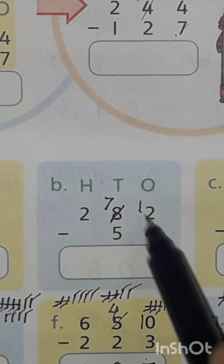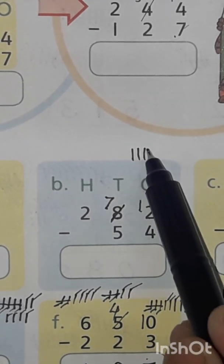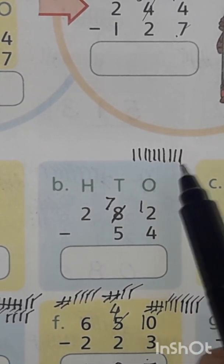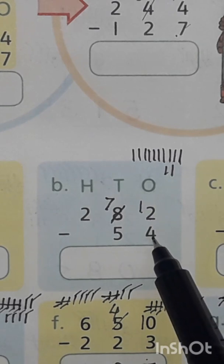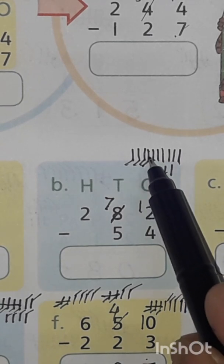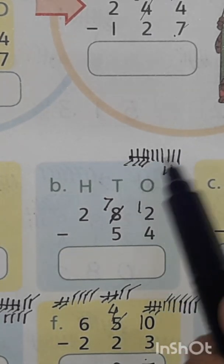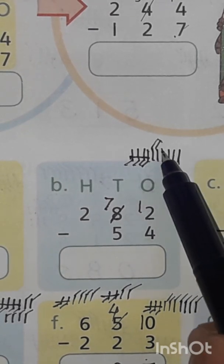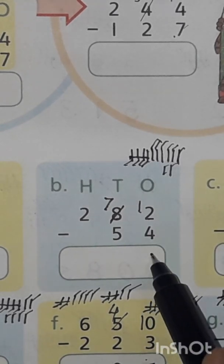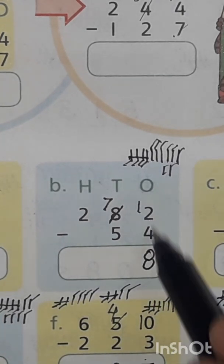Draw 12 lines: 1 through 12. The next number is 4. Cut 4 lines: 1, 2, 3, 4. Count remaining lines: 1, 2, 3, 4, 5, 6, 7, 8. The answer is 8. Write 8 under 1s.